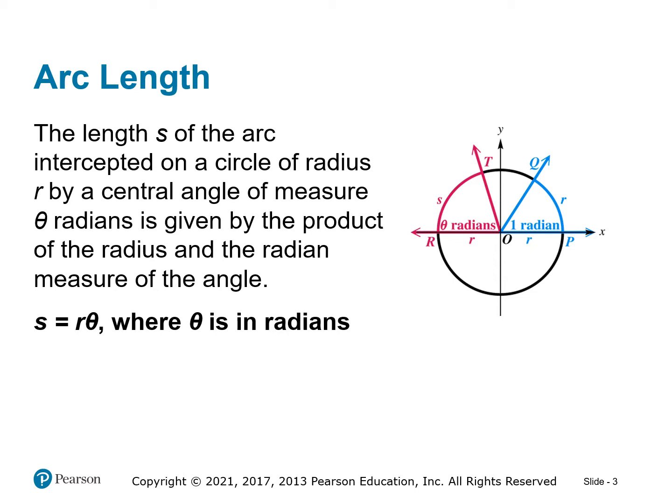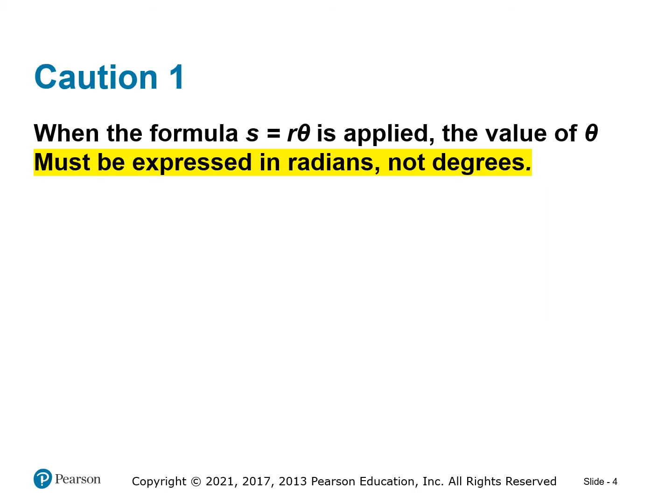Think of this sector piece as a little slice of pizza. If theta radians is our angle measure and our radius is r, then the outer edge of this angle — like the crust of the pizza slice — can be found using the formula arc length equals radius times the angle. This formula requires radians, not degrees.